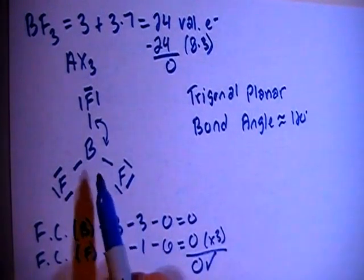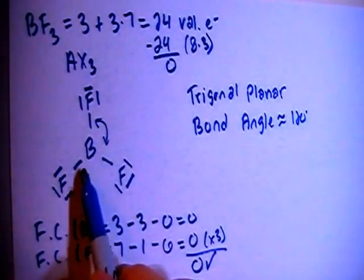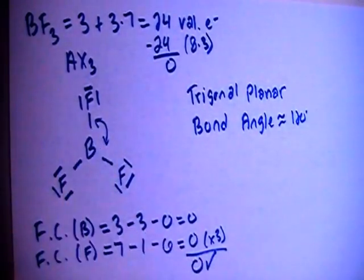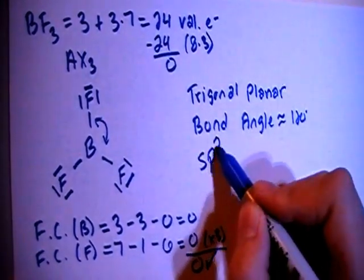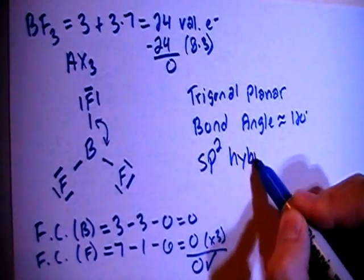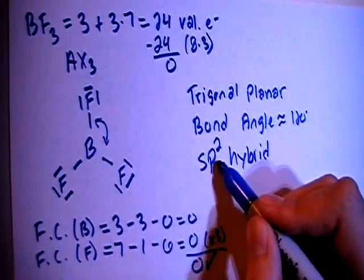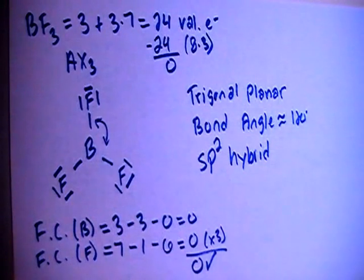In terms of hybridization, looking at the central atom boron, there's 1, 2, 3 bonding sites or electron groups, so you need 3 orbitals. So sp2 hybridization, 1s and 2ps, so 3 orbitals for 3 electron groups.